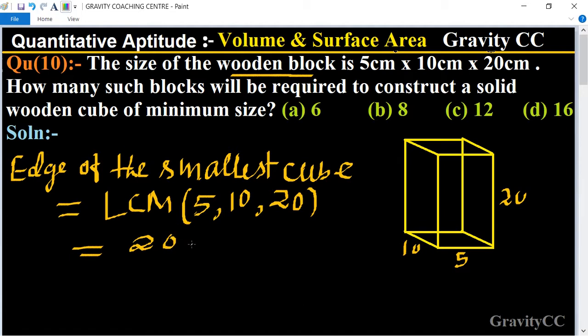So the edge of the smallest cube is 20 centimeter, and the volume of the smallest cube equals 20 cubed, which is 8000 cubic centimeter.